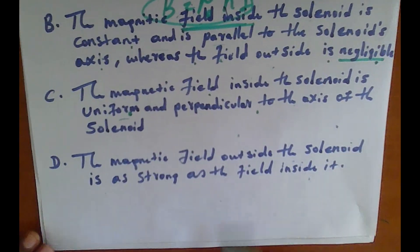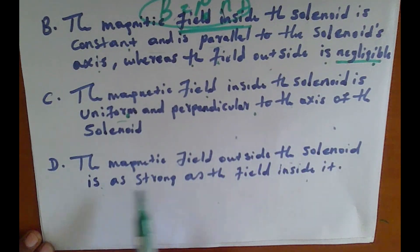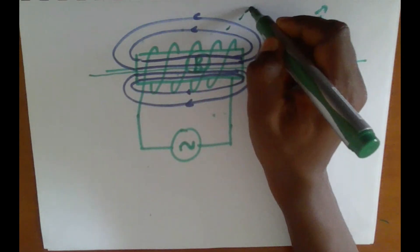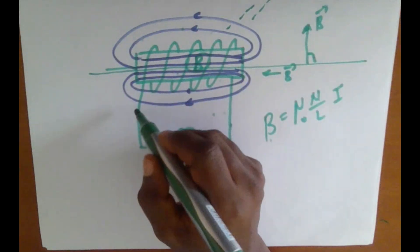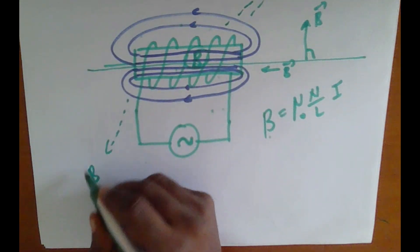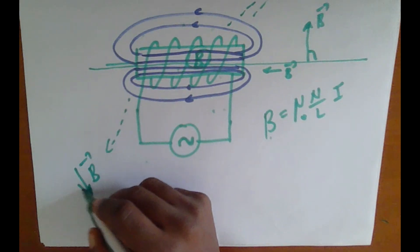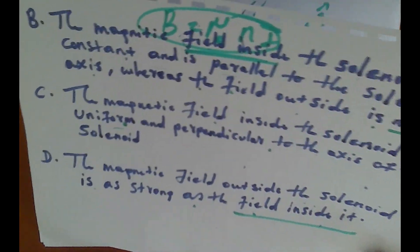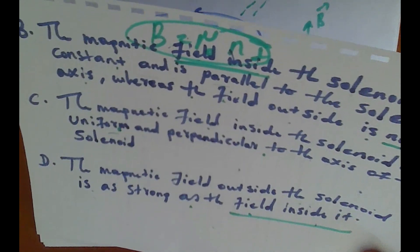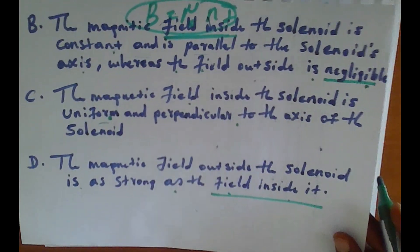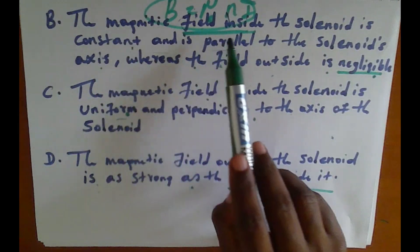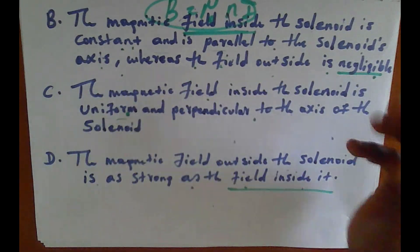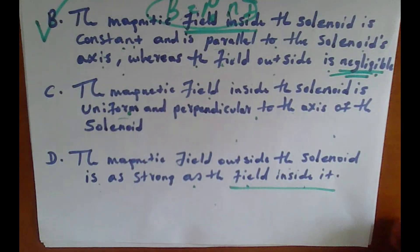Option D states the magnetic field outside the solenoid is as strong as the field inside — no! The magnetic field outside the solenoid is negligible and decreases as you move farther away, becoming smaller and smaller. So the correct answer is B: the magnetic field inside is constant and parallel to the solenoid axis, while the field outside is negligible.